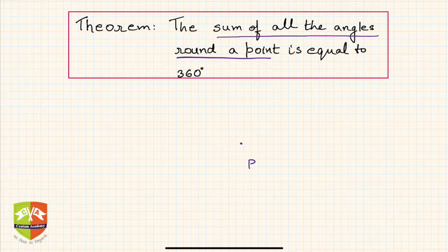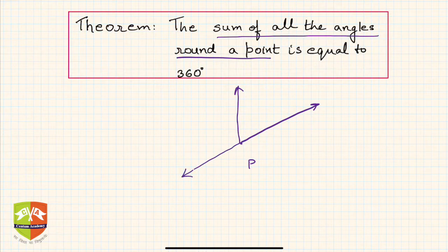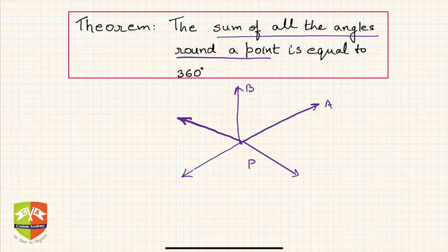What does it even mean? So let's say I have a point P and there are lots of angles having a vertex P. So lots of angles are possible with vertex P. I am just drawing them. So there are lots of angles around point P. Let's name them. So let's say this is A, this is B, this is C, D and E.